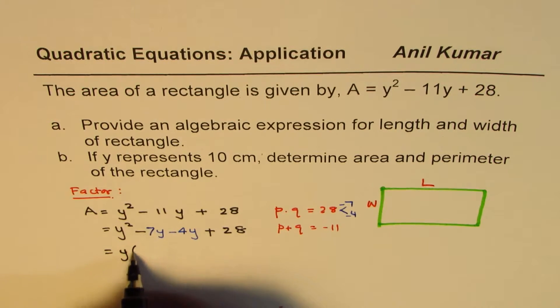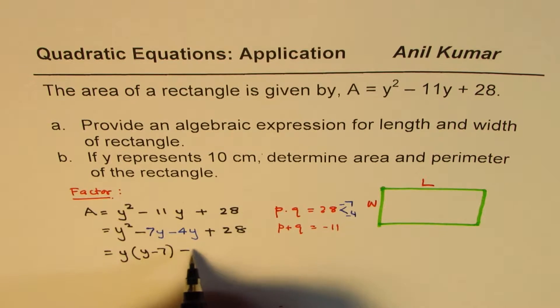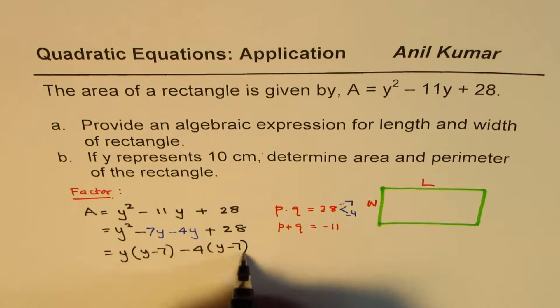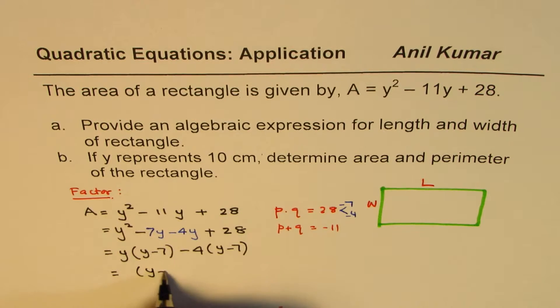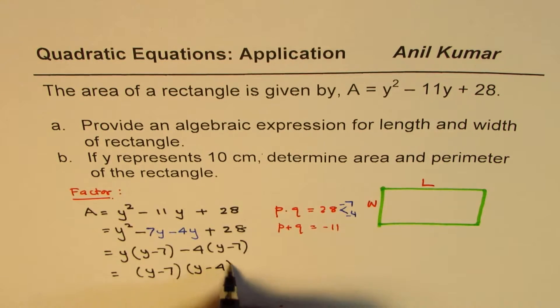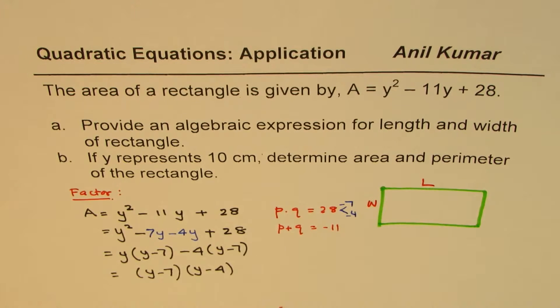We can combine the first two. Y is common here, so we get Y minus 7. From the other two, minus 4 is common, so we get Y minus 7 there also. Y minus 7 is a common factor. So we'll take Y minus 7 and we're left with Y minus 4. So now we have area in factored form.